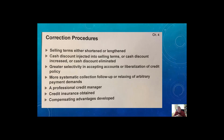What can we do to fix that? Well, we can either change the terms of sales — either shorten or lengthen when the payment is due. We might inject a cash discount to get people to pay faster, or we may eliminate it because people are taking advantage of it. We could have more systemic improved collection follow-up, or on the other hand, relaxing of payment demands, adding a professional credit manager, obtaining credit insurance, or developing options. So those are some of the things we can do when we see some of these ratios being off.